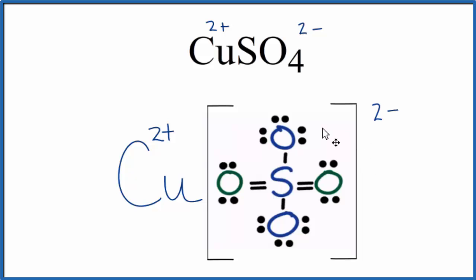The Lewis structure here is very useful to see how the copper transferred electrons to the sulfate. Now we have the positive and negative ions. They attract and form that chemical bond, that ionic bond.